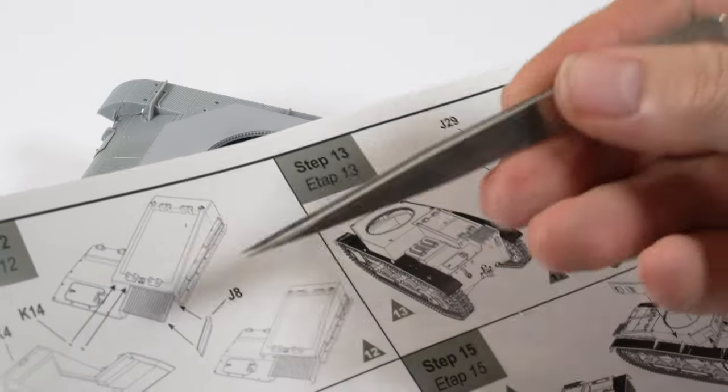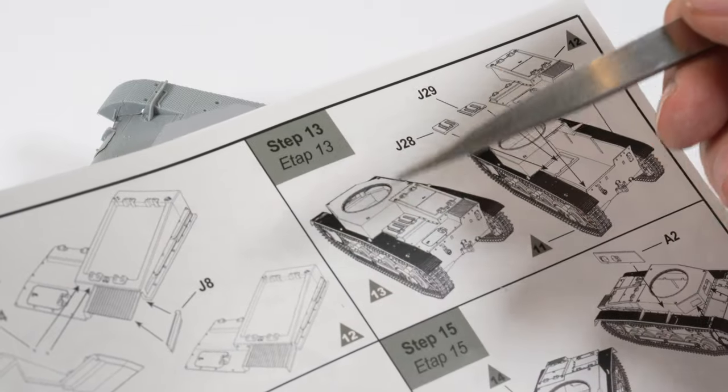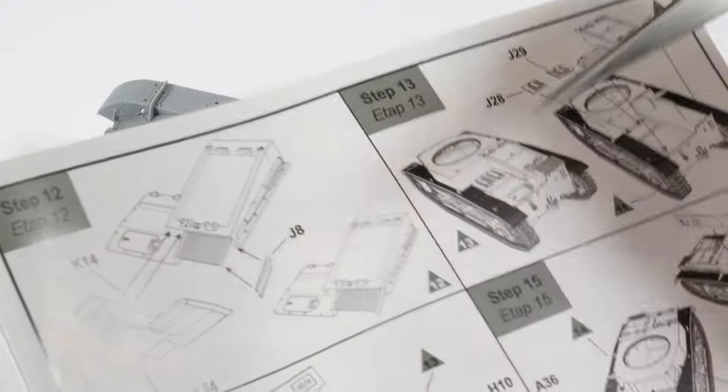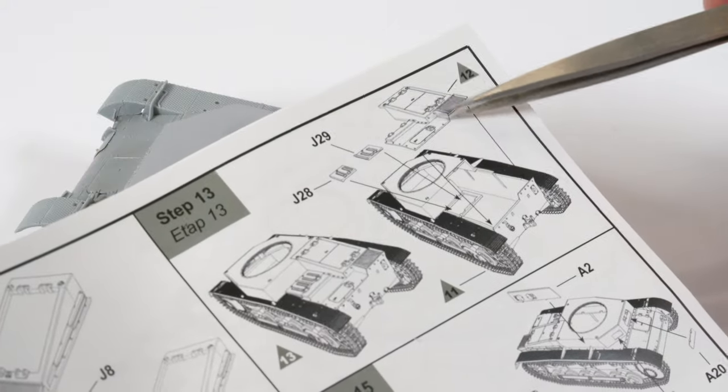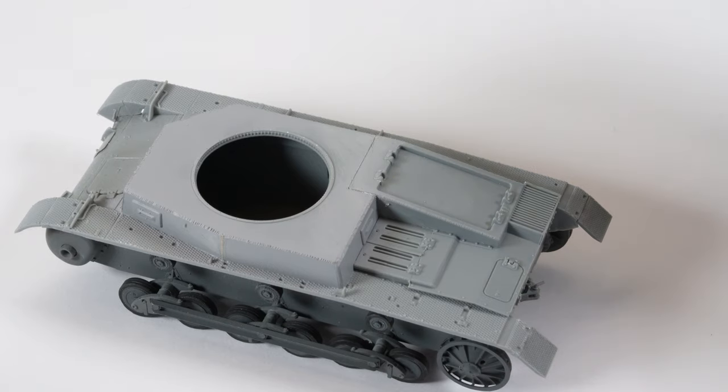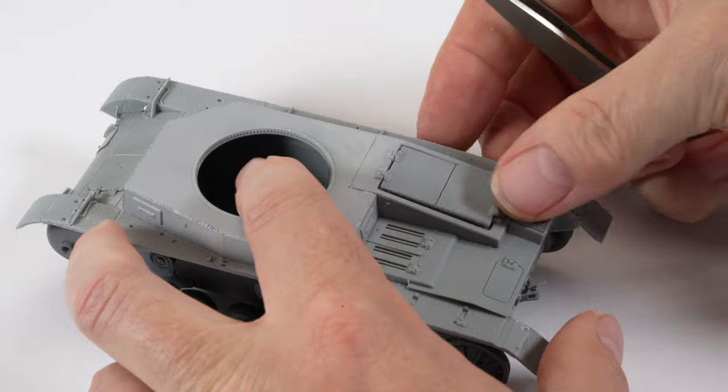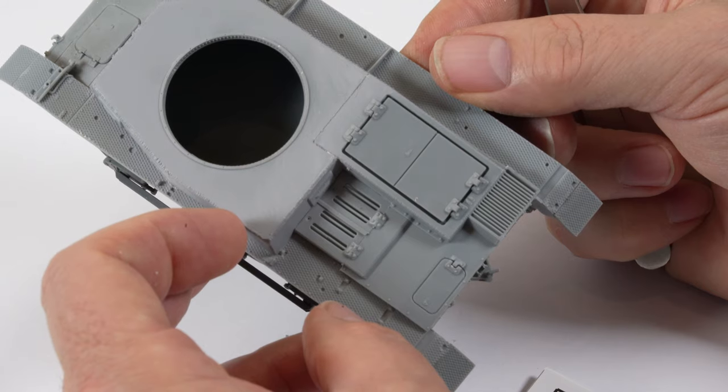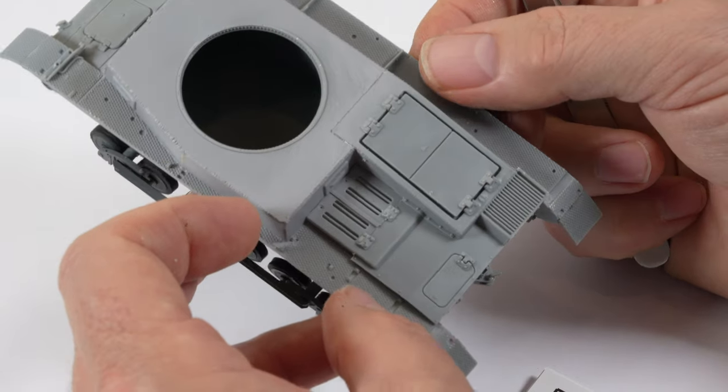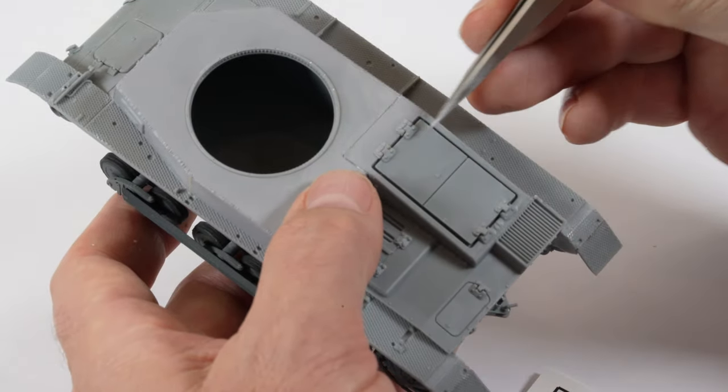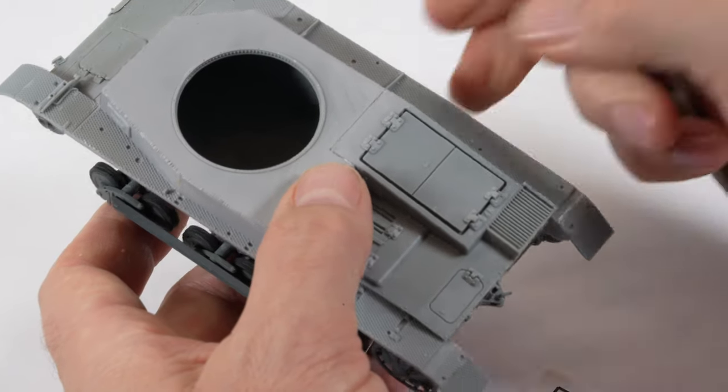I noticed at this stage that the hatch covers from the engine deck just magically appear on the instruction sheet and don't actually get a part call out and whilst they are easy to identify that's not the point—it's really not good enough for a modern day kit. And once in place there seems to be an incredibly oversized gap around the edges. Now I have no reference to suggest that that is incorrect, it just looks wrong to my eye.